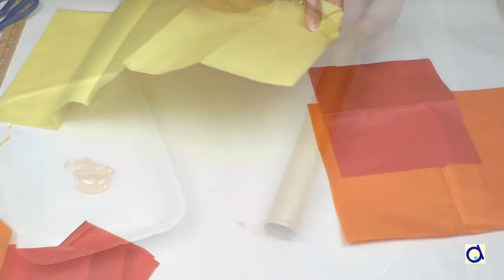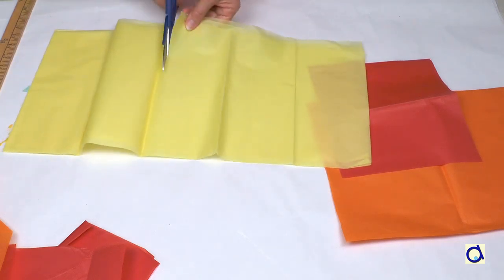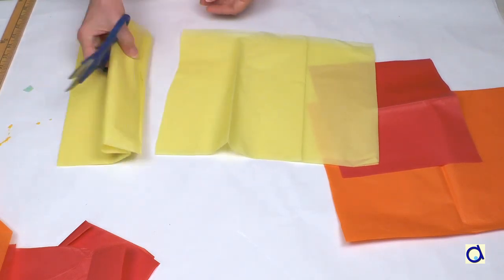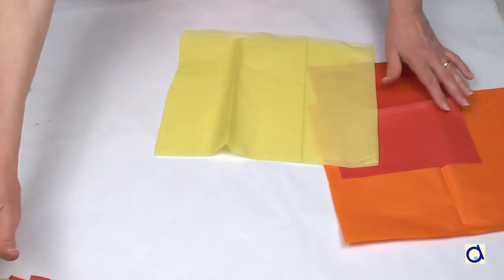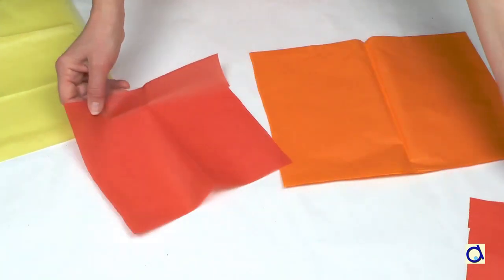Then take yellow, orange and red tissue paper. Cut out squares or rectangles in these three colors. The tissue paper will represent the flame on top of the Olympic torch.